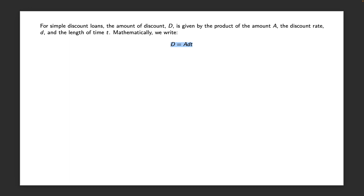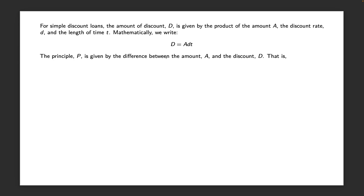This has a very similar feel to our previous formula I = P·R·T. Now instead we're going to express this discount in terms of the amount A. The principle P is given by the difference between the amount A and the discount D. So remember A = P + I; now what we have is P = A - D, or equivalently P + D = A, where D and I are effectively exchangeable. The only difference is how we express this: interest I is expressed in terms of P, while discount D is expressed in terms of A.